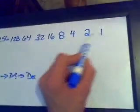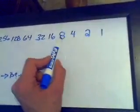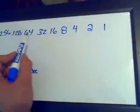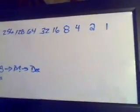So, this is 2 to the 0, 2 to the 1, 2 to the 2, 2 to the 3, 2 to the 4, 2 to the 5, 2 to the 6, 2 to the 7, 2 to the 8.